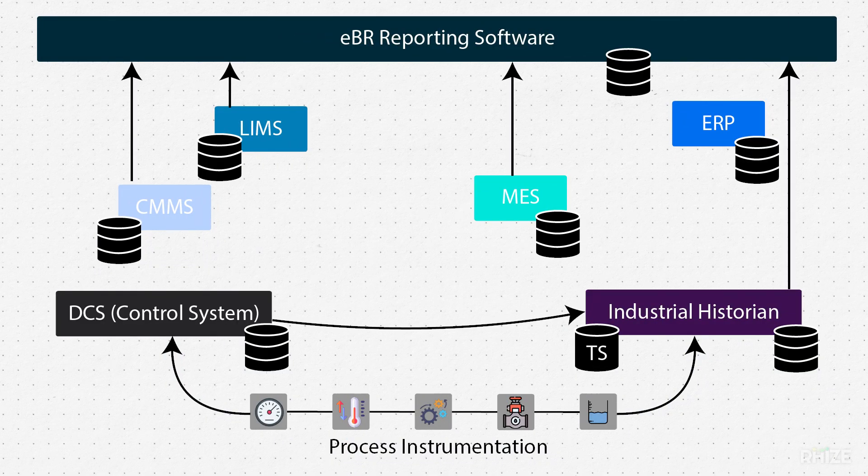For purposes of explaining the solution, we need to establish the typical baseline that we encounter in manufacturing. Because it's common in the industry, we'll use the electronic batch record as the use case that we're digitally transforming. If EBR doesn't apply to you, just substitute the systems that make up your most important use case — genealogy track and trace, or maybe production order management.